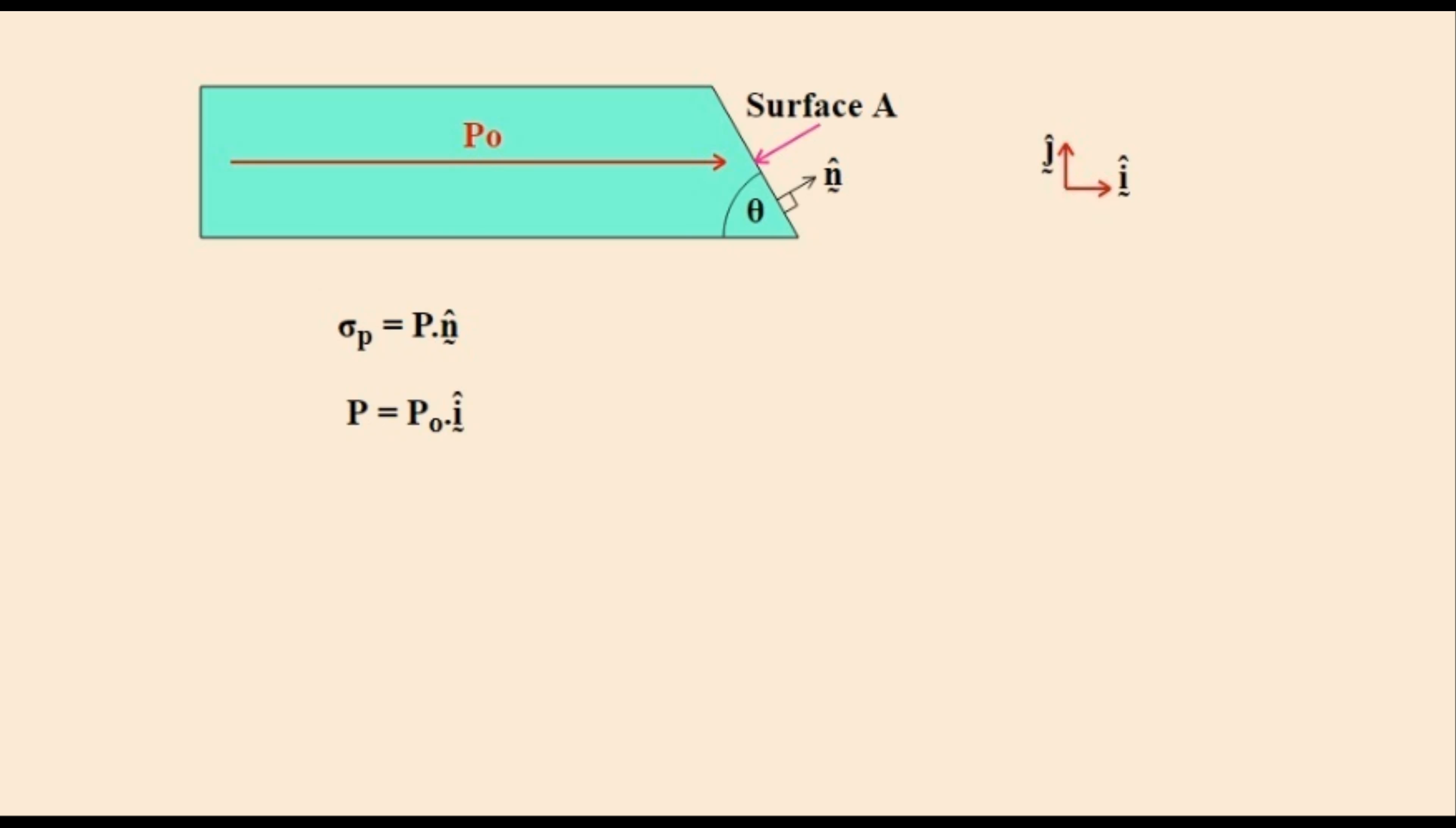The value of the polarization is equal to P0 which is constant and not dependent on its position in space and is in the direction given by the unit vector I. The unit normal vector N for surface A is given by this expression and is dependent on the angle theta. It can be easily calculated using geometry.